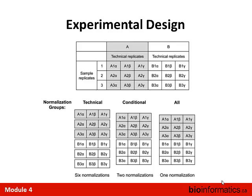Their second attempt was much more rigorous. The first thing they did was create a block design — they divided their experiment into two groups. One group had technical replicates, where each individual sample was done in triplicates, so sample E1 would be done three times: alpha, beta, and gamma. They also had replicates they called 'conditional,' which are closer to biological replicates.